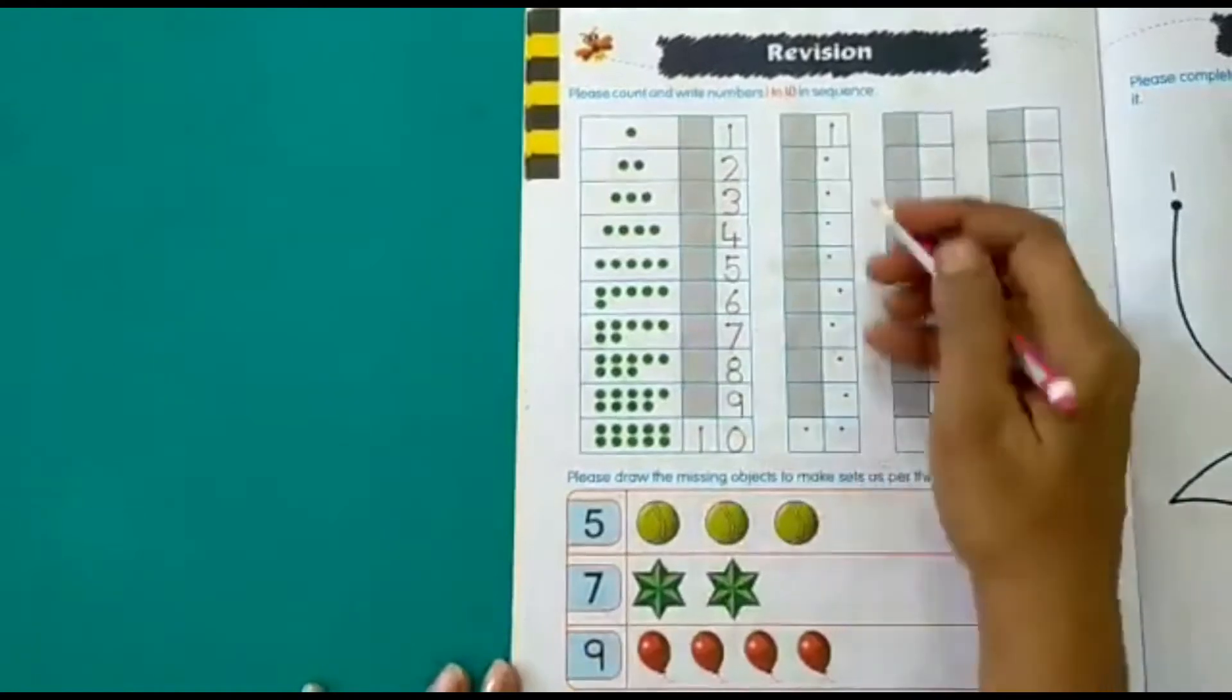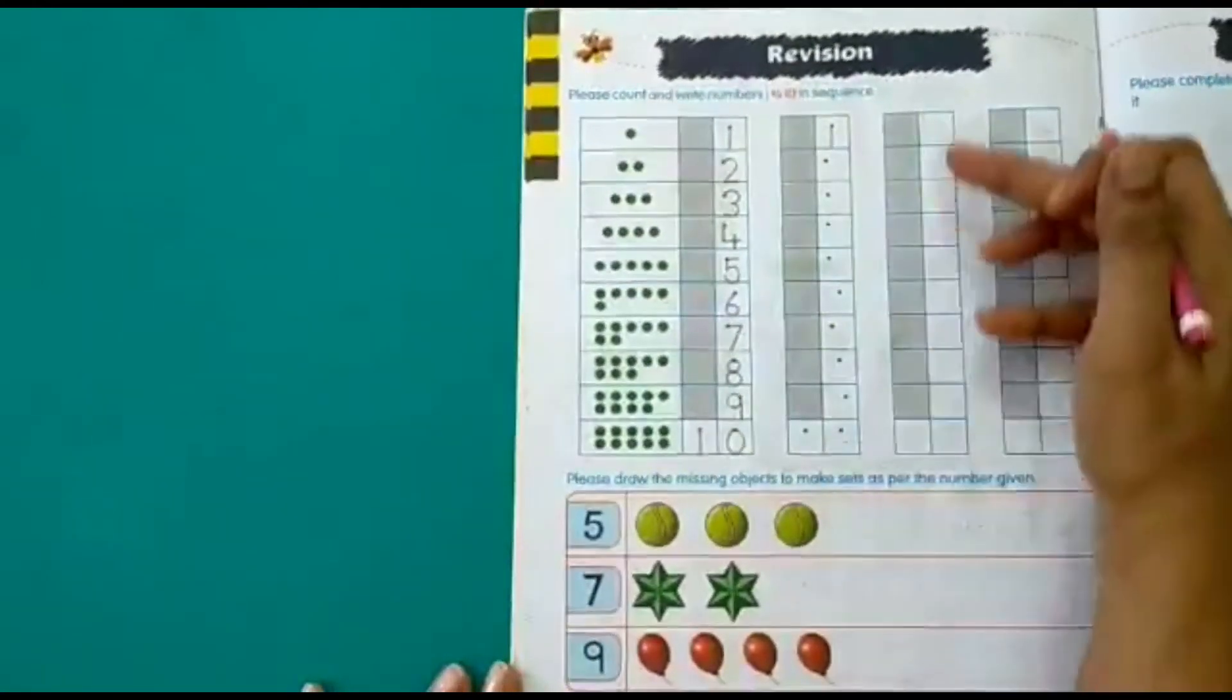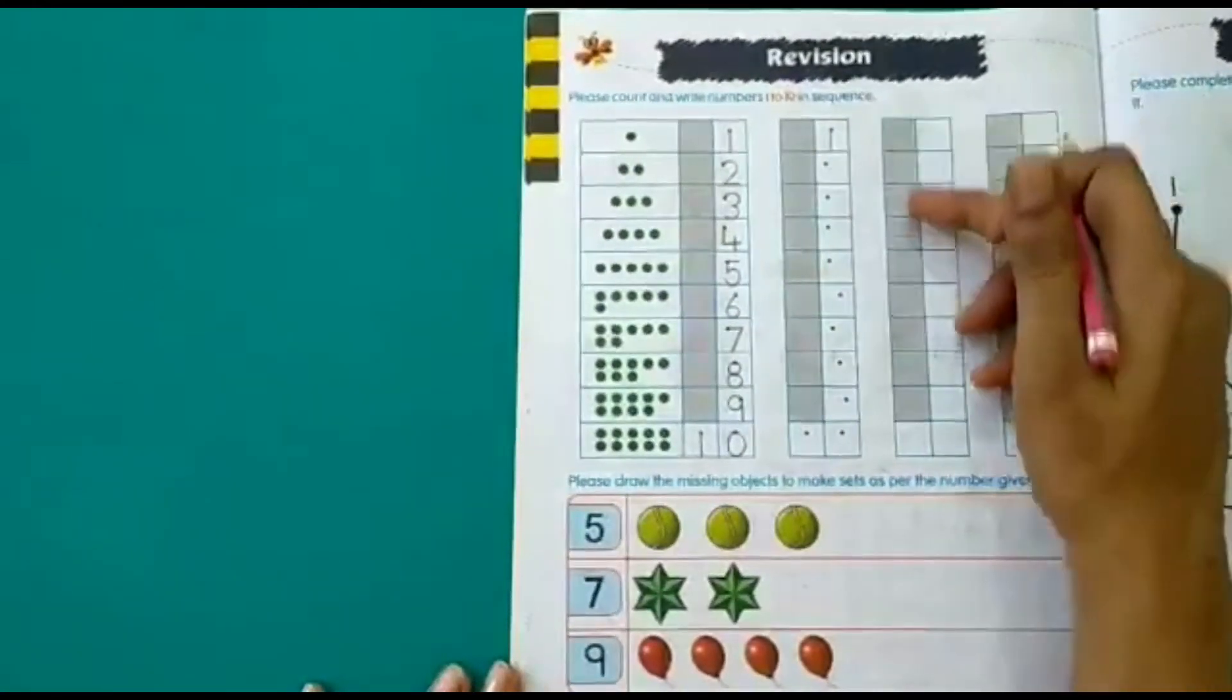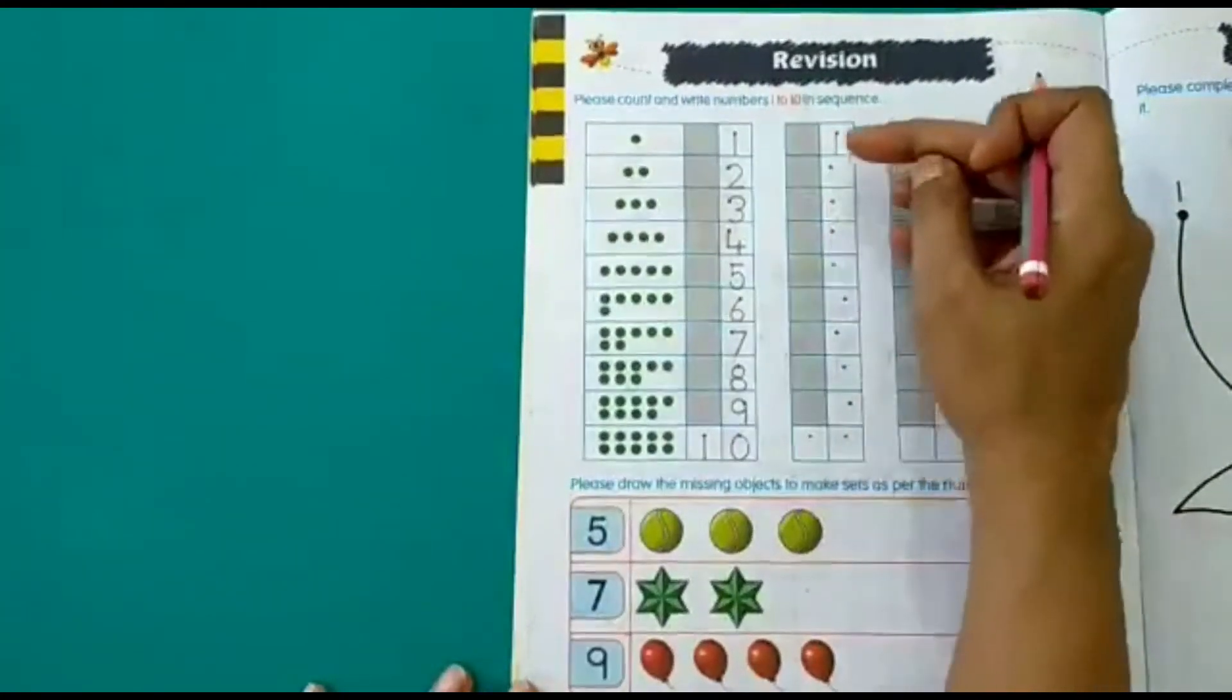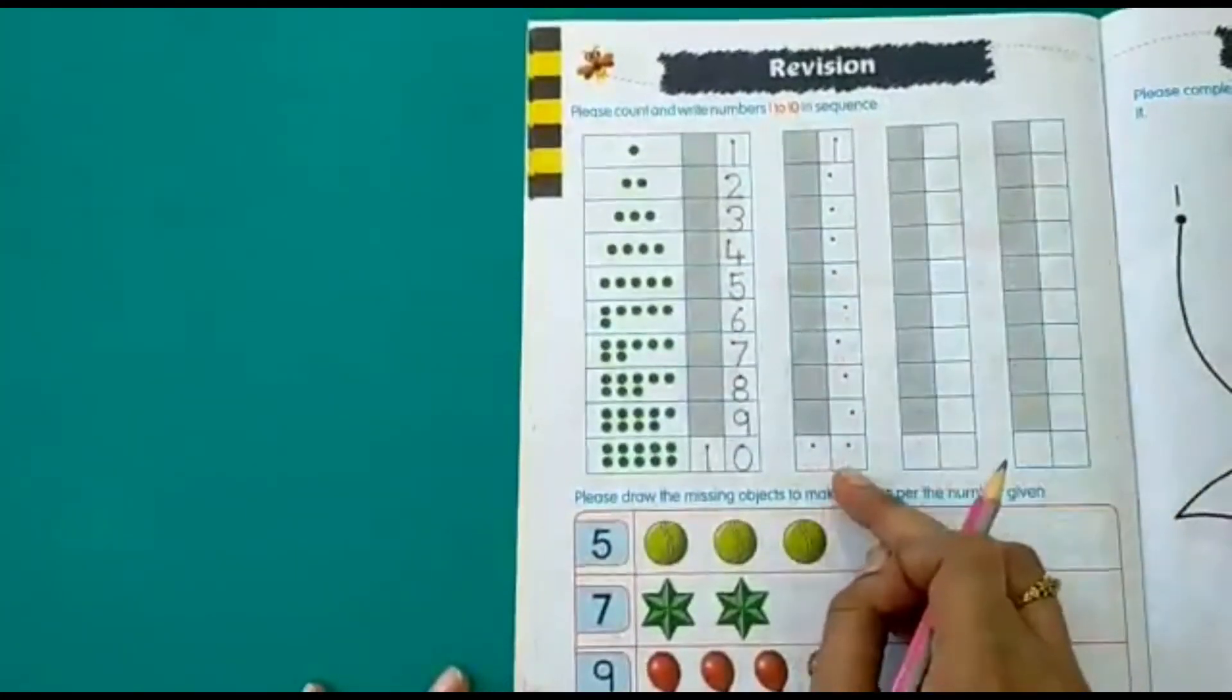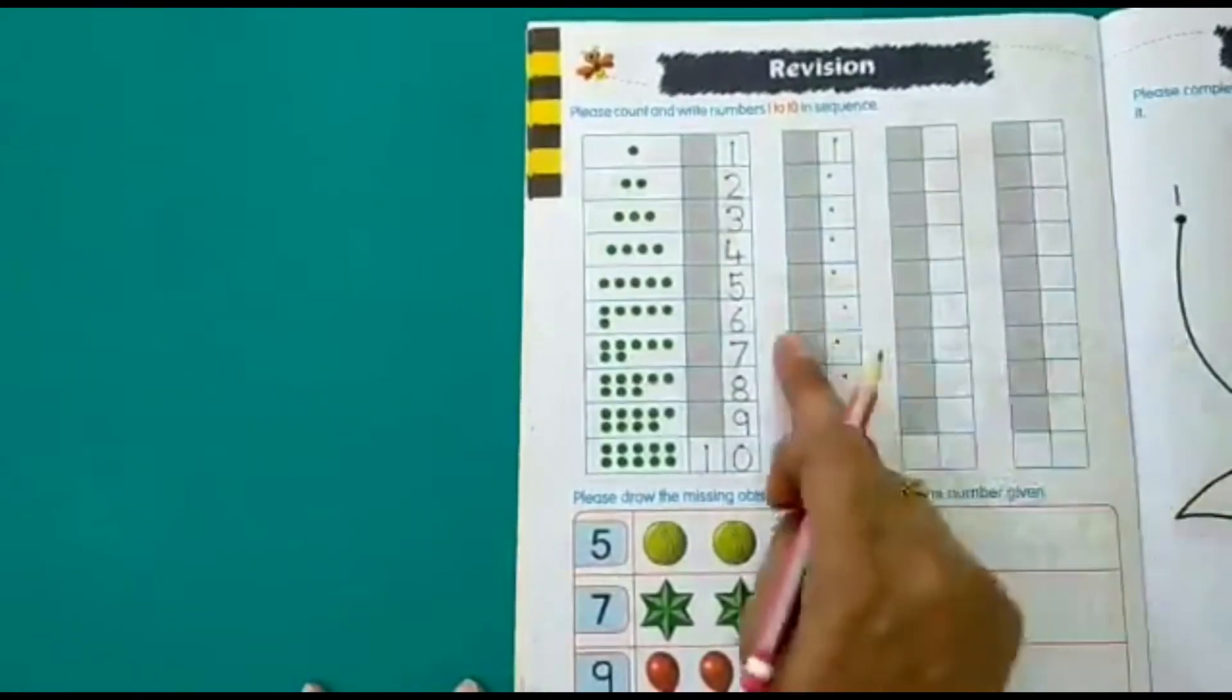So you have to write and practice 1 to 10 in the boxes given here. You have to write 1, 2, 3, 4 in the same sequence. You have to write till 10. Write and practice in all these boxes.